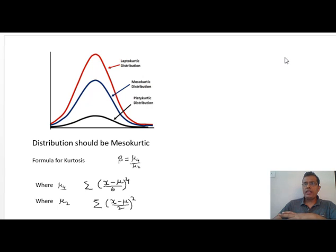Skewness can be positive, negative, or 0, but kurtosis can never be negative.